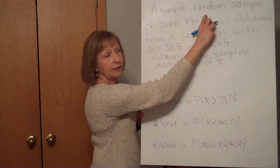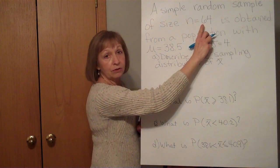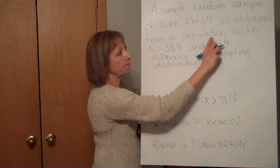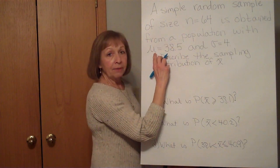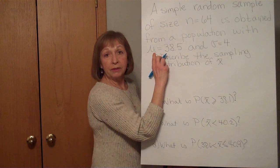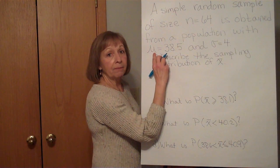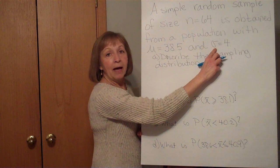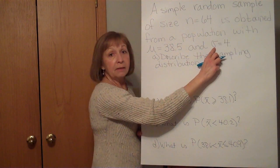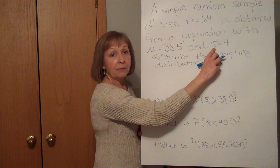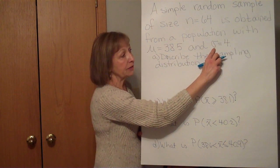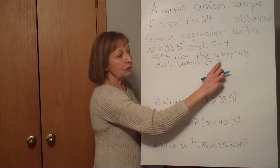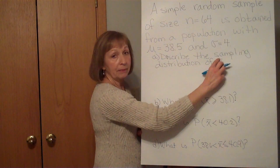Well here we have a simple random sample of size n=64, obtained from a population with μ=38.5 and σ=4. And I want to describe the sampling distribution of X bar, the sample means.